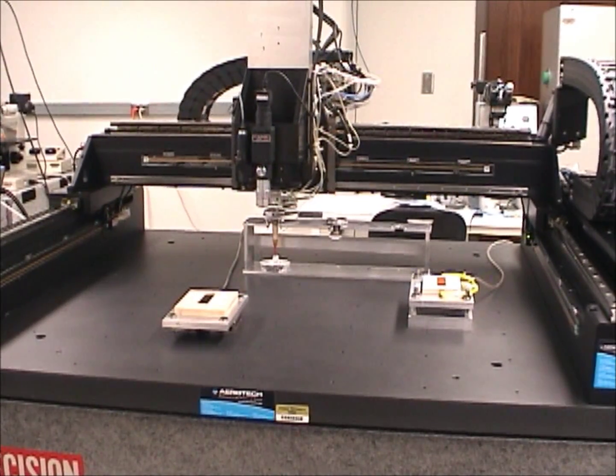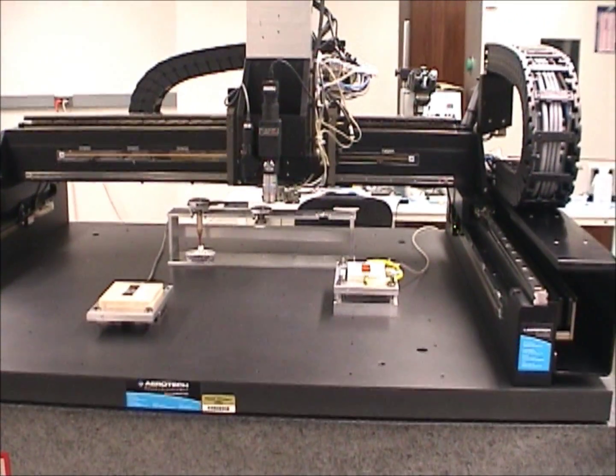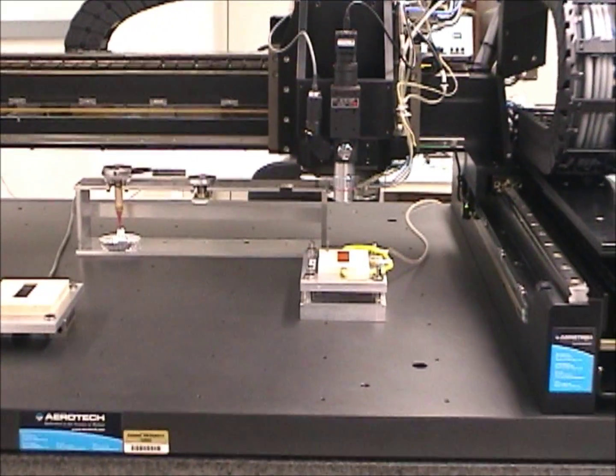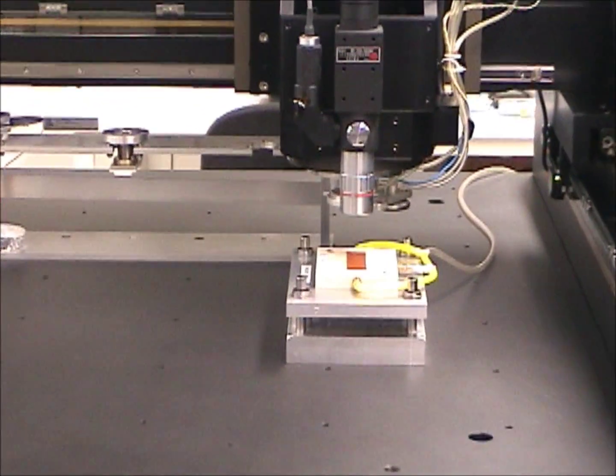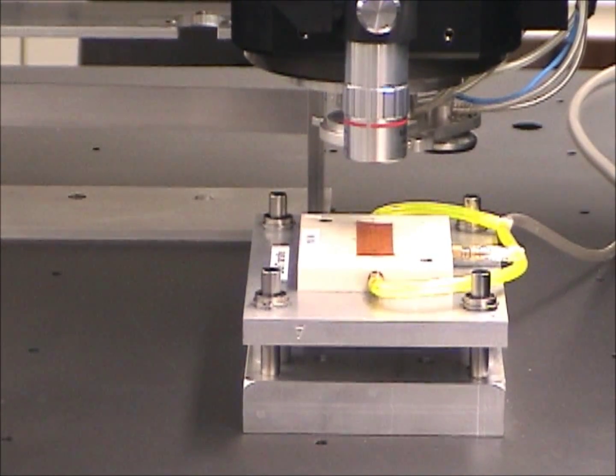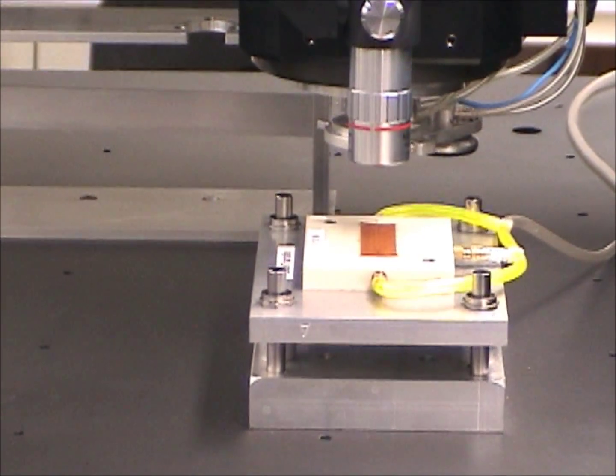All right, the gantry is moving to the location of the HDI and we'll acquire fiducials, one at each end of this mechanical grade HDI we have, a piece of Kapton with a couple pieces of silicon glued to it.